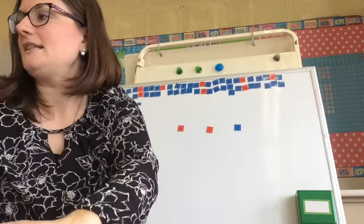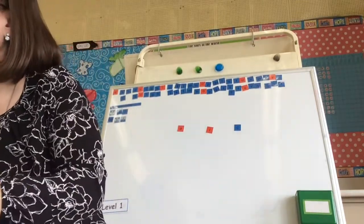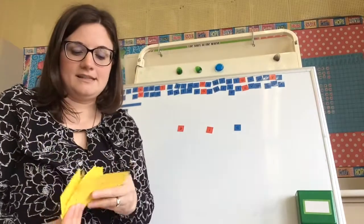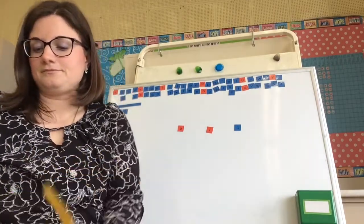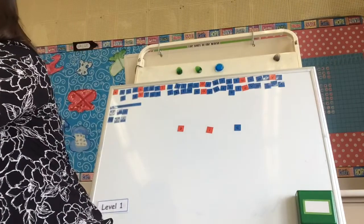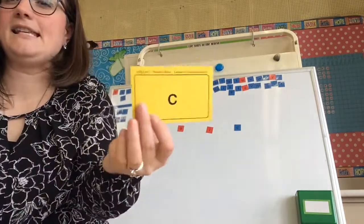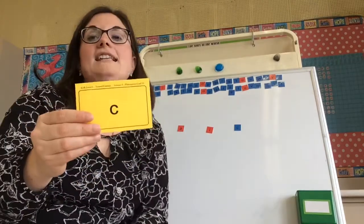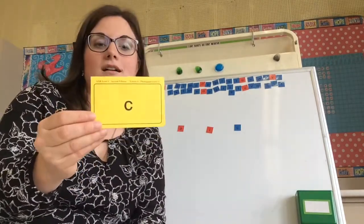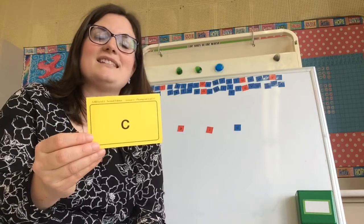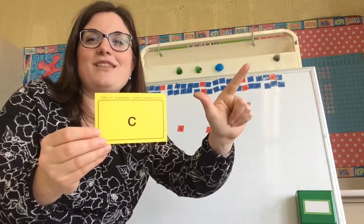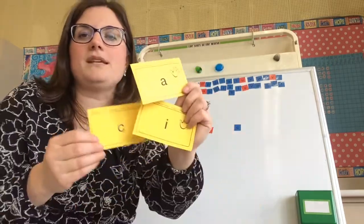And my next one, I think, because we had learned these, is the letter C. And so we have the letter C just like I've got up on that board. And C, we know says kuh, but it also can say s, like an S. So it can say kuh, s. Do that with me. Kuh, s.